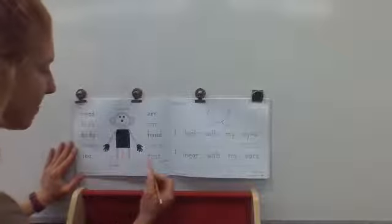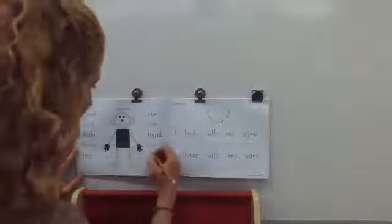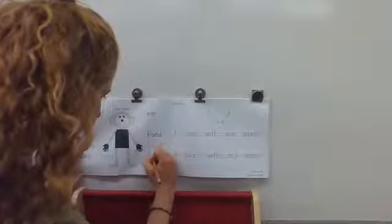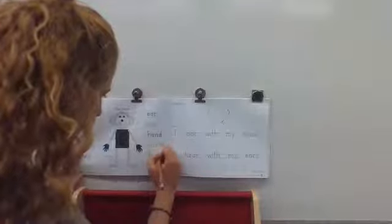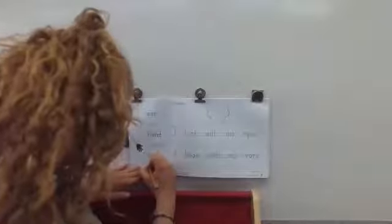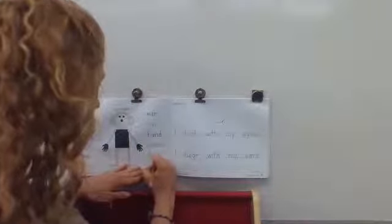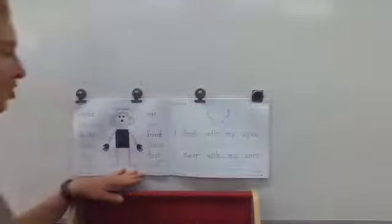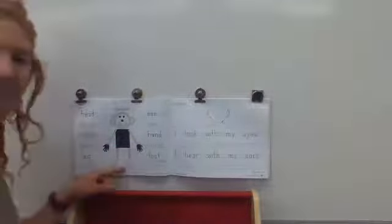And lastly for Mat Man, we have foot. F, O, O, T. And now on my own. F, O, O, T. Check. I labeled my Mat Man.